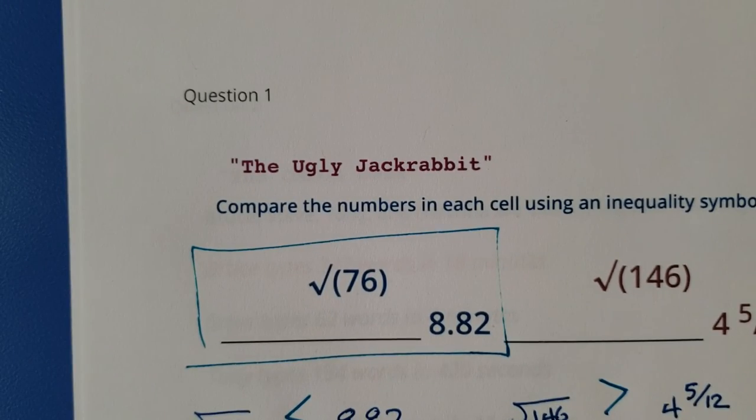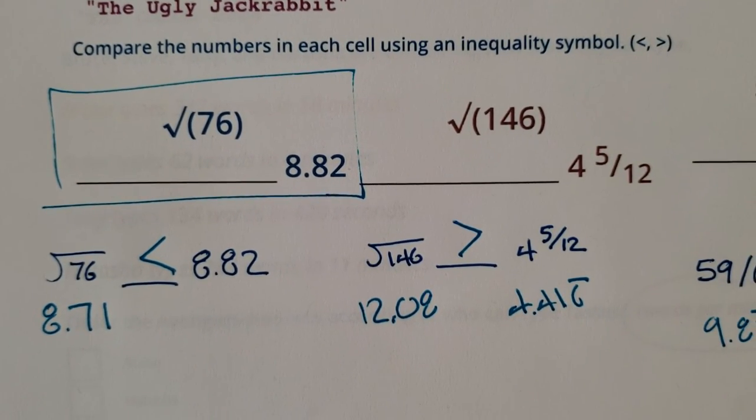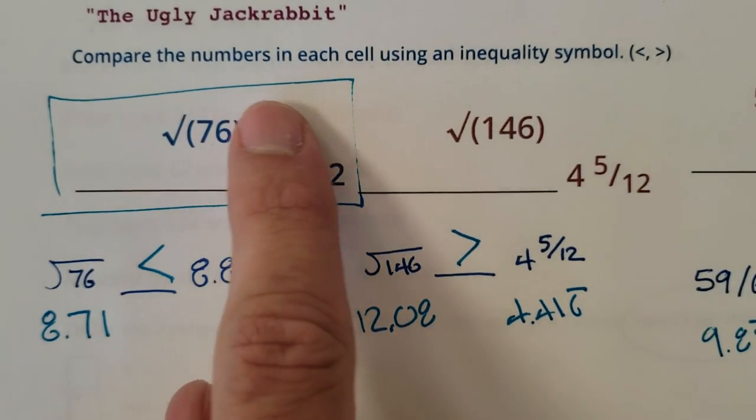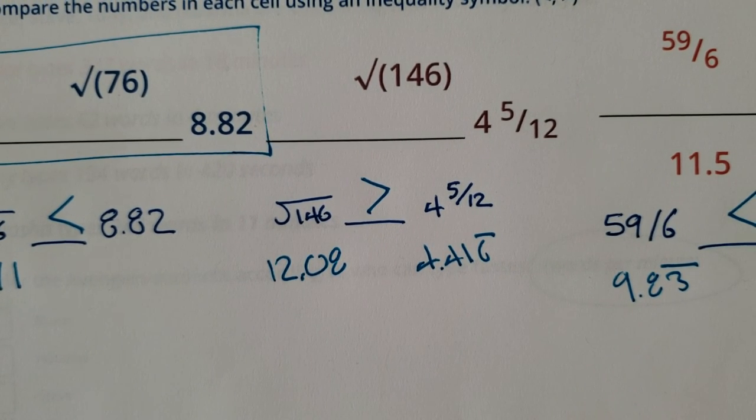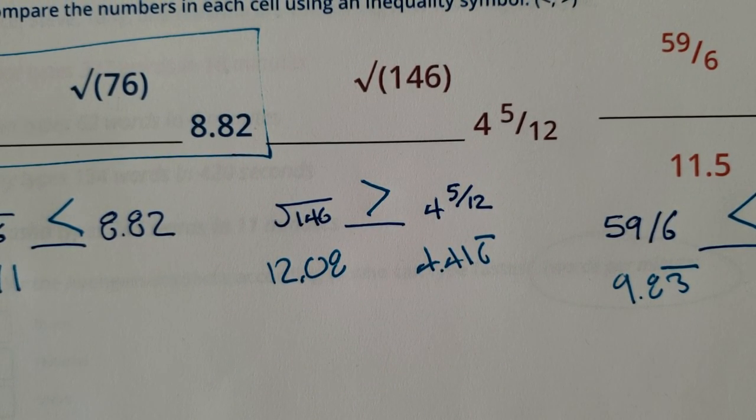All right students. That was the ugly jackrabbit. Compare the numbers in each cell using the inequality symbol. You probably want to change them into decimals and then everything should be easy from there. Moving on.